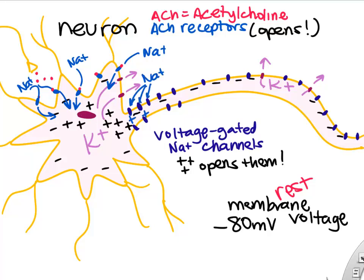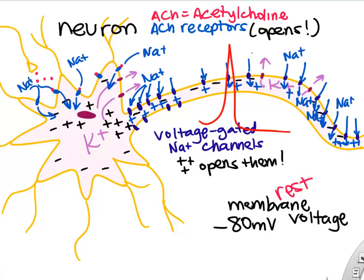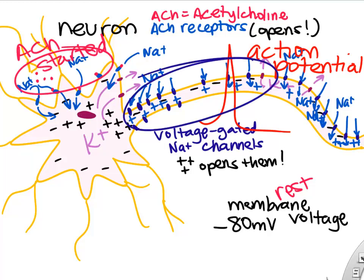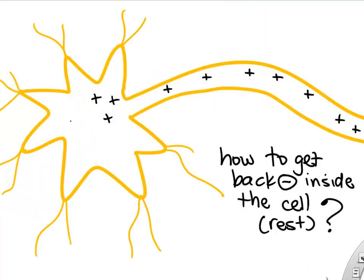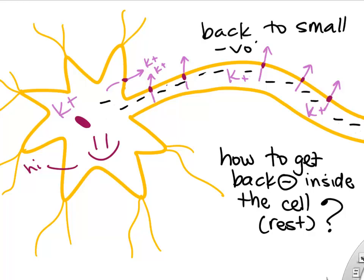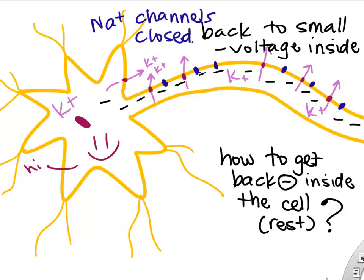When sodium rushes in, it opens the next set of voltage-gated channels, and down the cell length the action potential travels like dominoes. What triggered it was a chemical message — acetylcholine, a neurotransmitter — which caused a wave of positive charge we call an action potential. To get the neuron back to rest, potassium leaves the cell through open channels, and the cell returns to negative. The voltage-gated sodium channels close, ending the action potential.